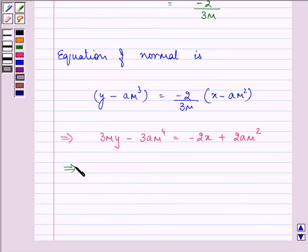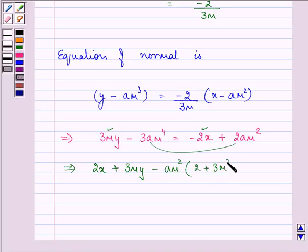Now, since it can't be further simplified, let us take all the terms to the left hand side. We have 2x plus 3my, minus—from these two, when it has been taken here, we can take am² common—we will be left with (2 plus 3m²) equal to 0.